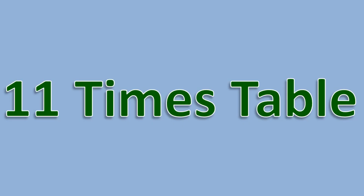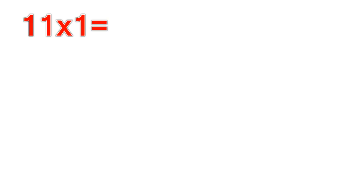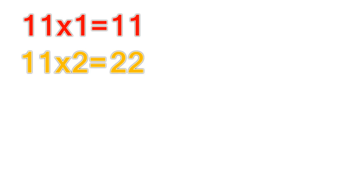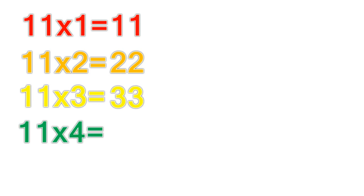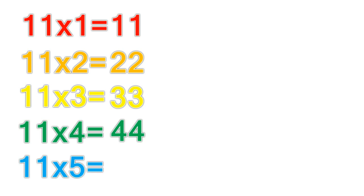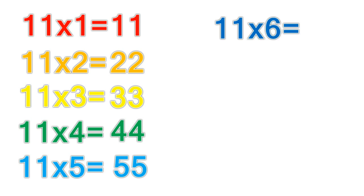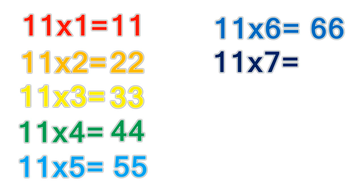11 times table. 11 times 1 equals 11. 11 times 2 equals 22. 11 times 3 equals 33. 11 times 4 equals 44. 11 times 5 equals 55. 11 times 6 equals 66. 11 times 7 equals 77.